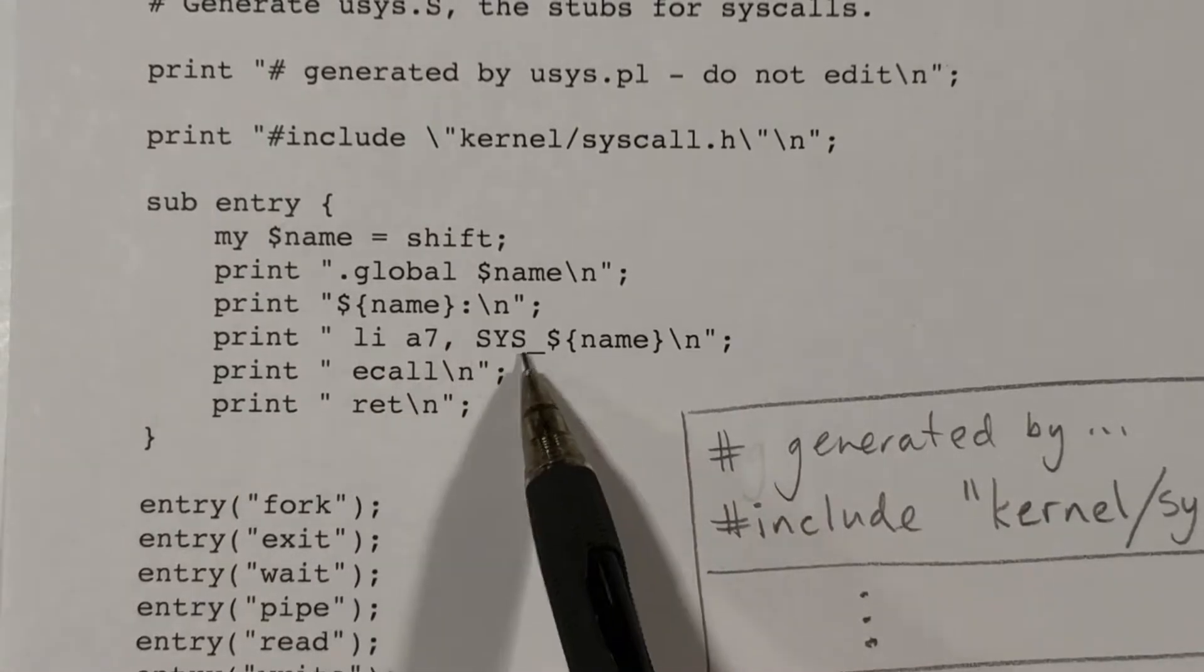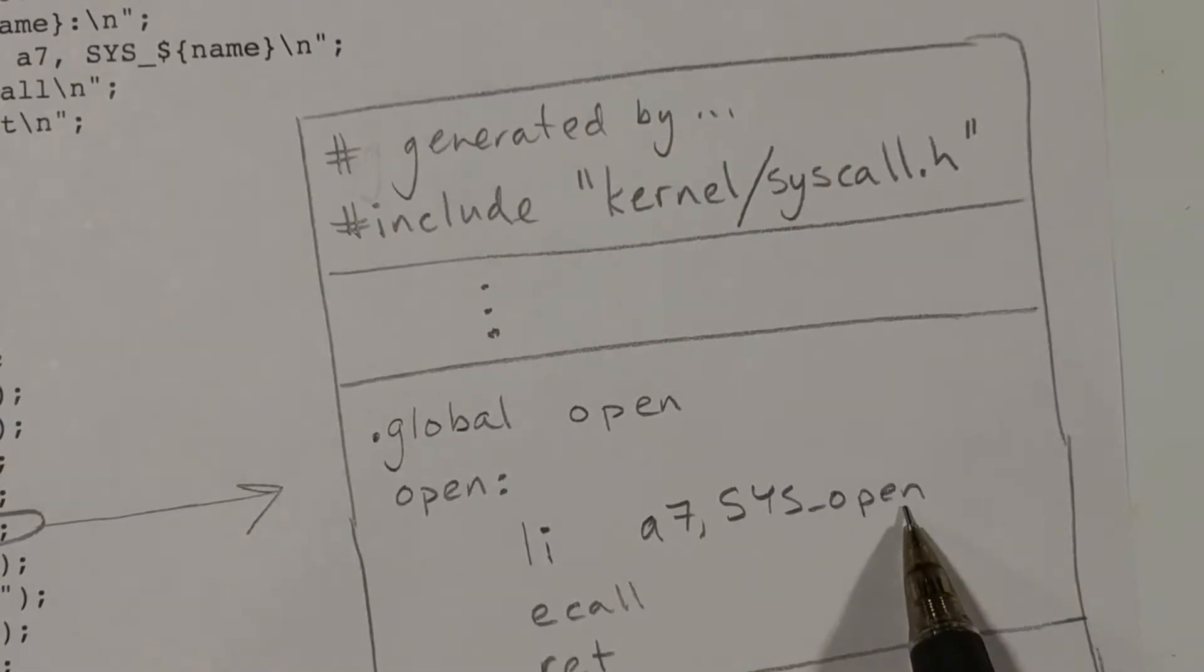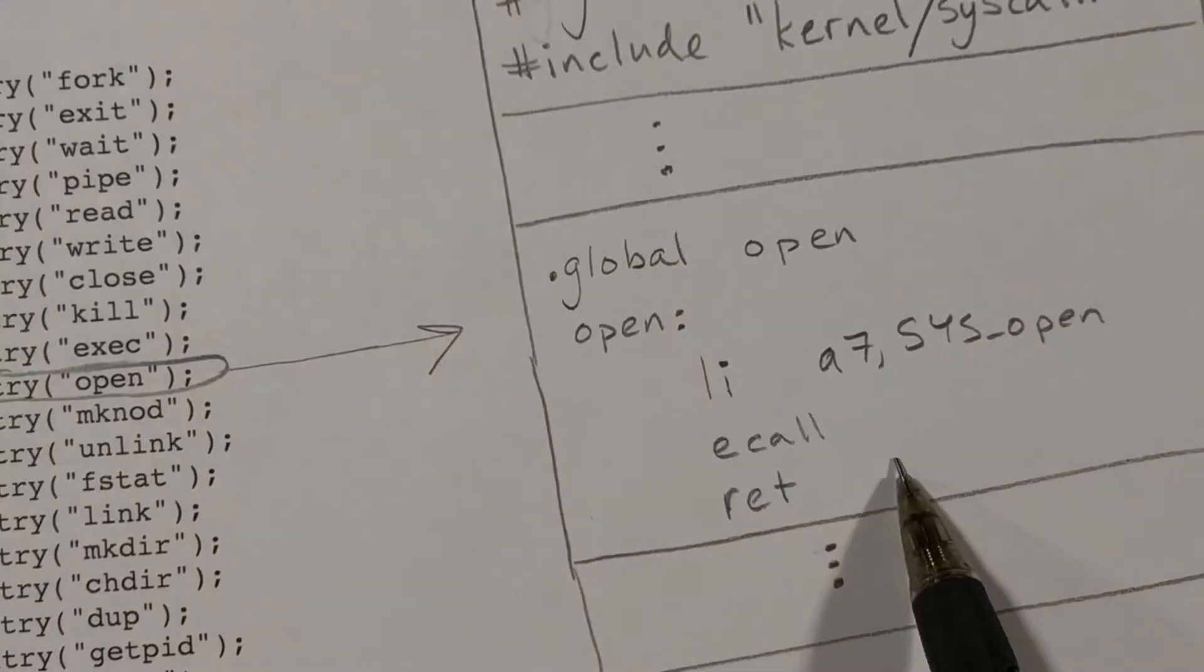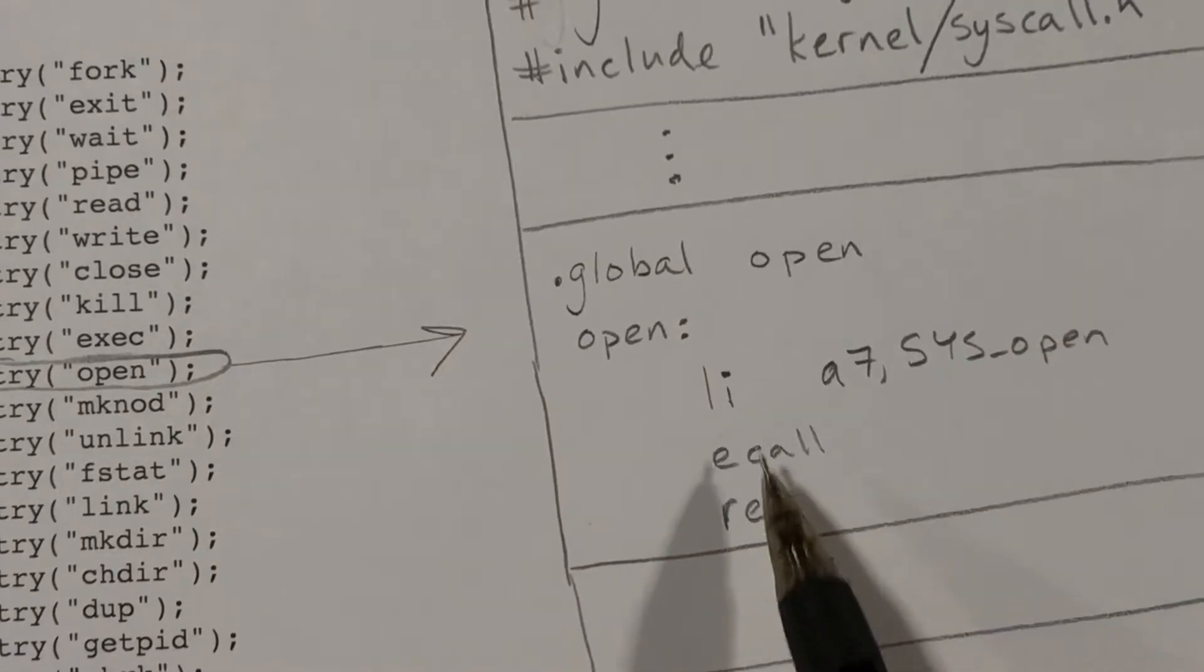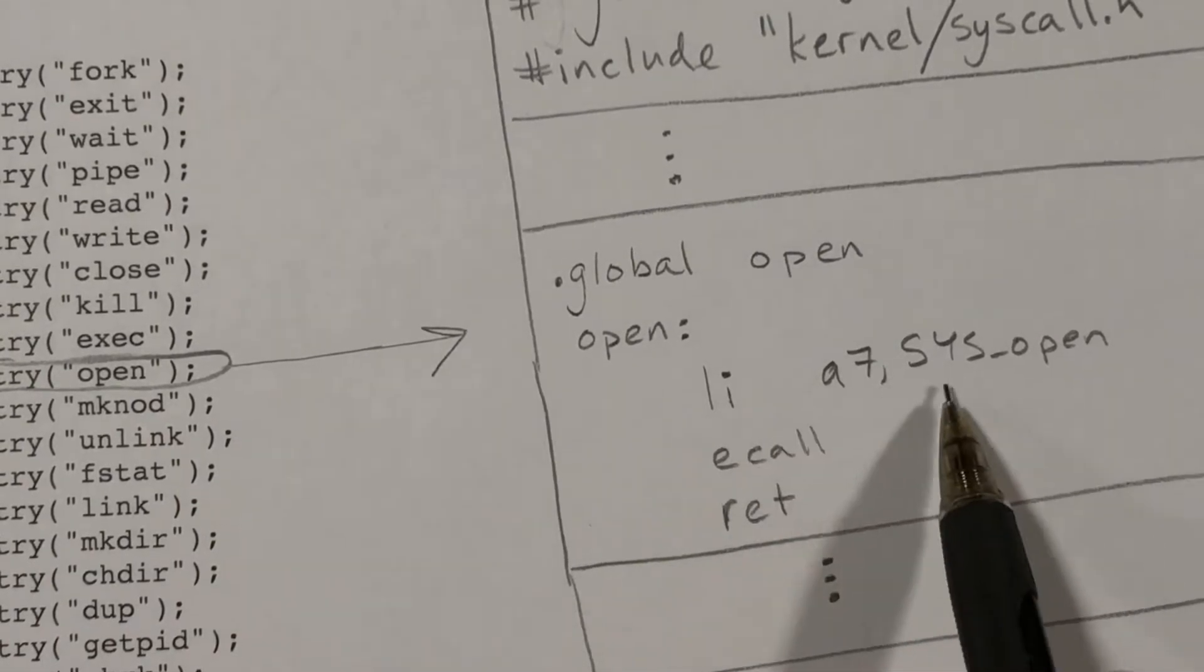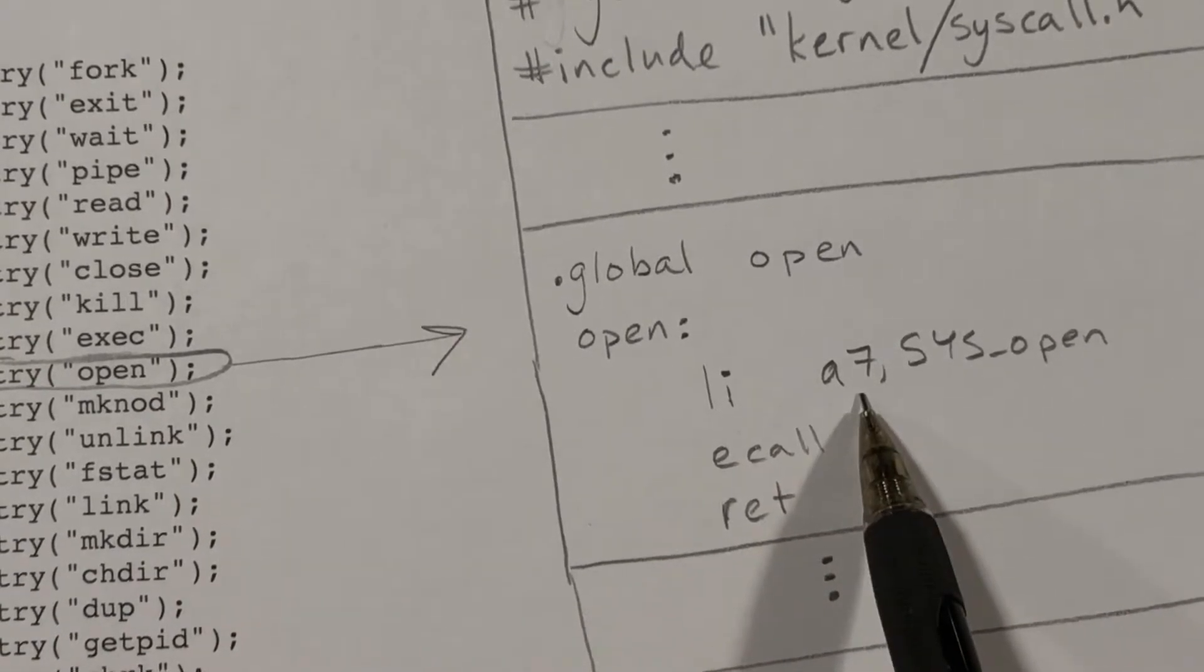li, a7, and then again, sys, underscore, and then our name, sys, underscore, open. So for each one of these, we'll have a very small function. This function will execute a load immediate instruction, which will move some constant into a7.